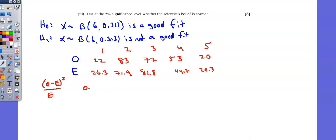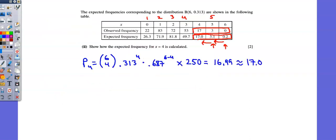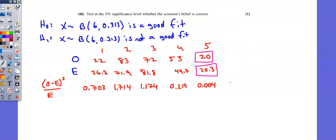The result, 0.703. And the other calculations result in 1.714 rounding to three decimal places, 1.174, next 0.219, and finally 0.004. As a reminder, recall that our 20 is a combination of three categories and 20.3 is a combination of three categories. We find those individual measurements on the prior slide. When I sum these values, I have my chi-squared statistic. That sum is 3.814.